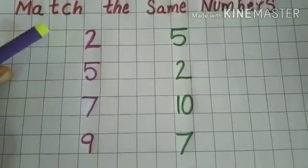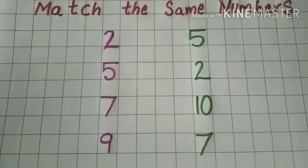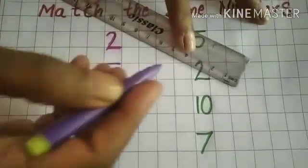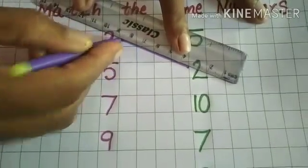Children, this is 2. Now you have to match 2 with 2. This way.